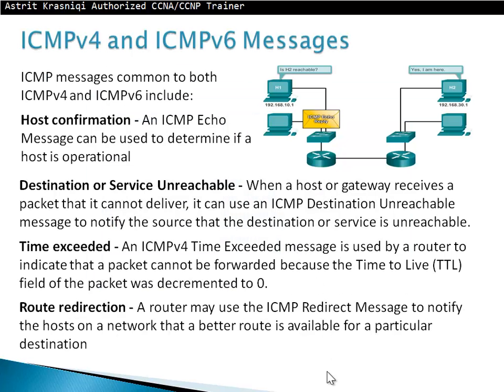ICMPv4 and ICMPv6 messages. ICMP messages common to both ICMP version 4 and version 6 include host confirmation. An ICMP echo message can be used to determine if a host is operational. If you want to check if a destination host is there and operational, you can send an ICMP echo message and you should get an ICMP reply message.